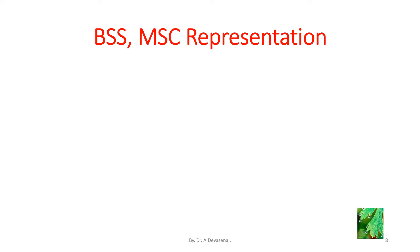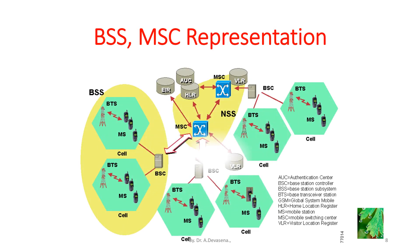Here is another representation of BSS MSC. BSS — base station subsystem — comprises of BTS (base transceiver station) connected to BSC (base station controller). The BSC has a link to the MSC, that is the mobile switching center. In the mobile switching center, we have EIR (equipment identity register), HLR (home location register), AUC (authentication register), and VLR (visitor location register), as indicated in the diagram.